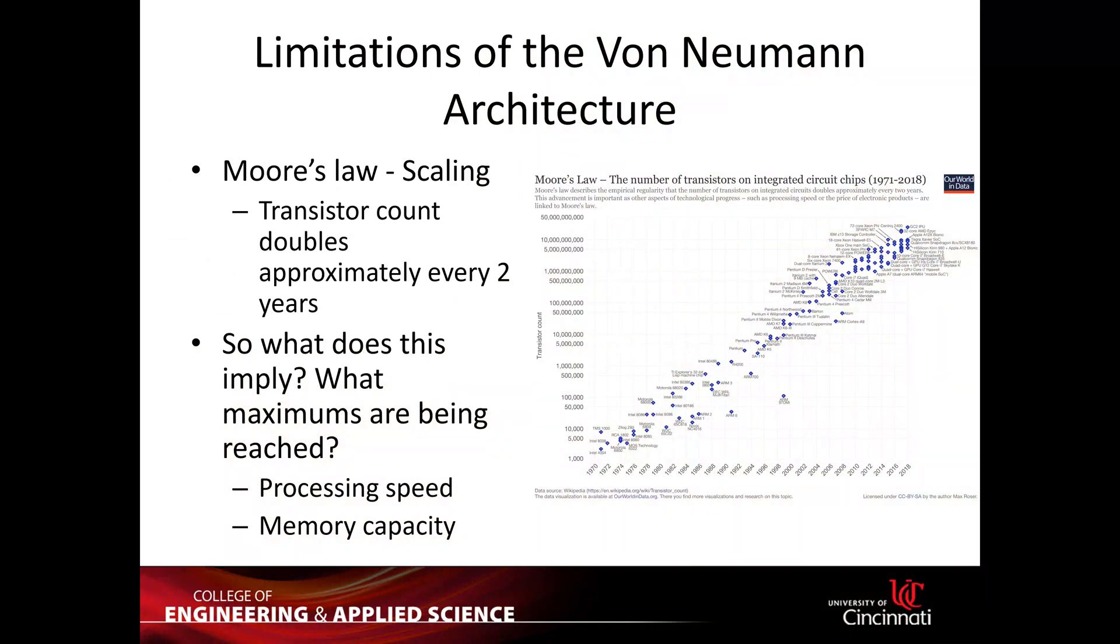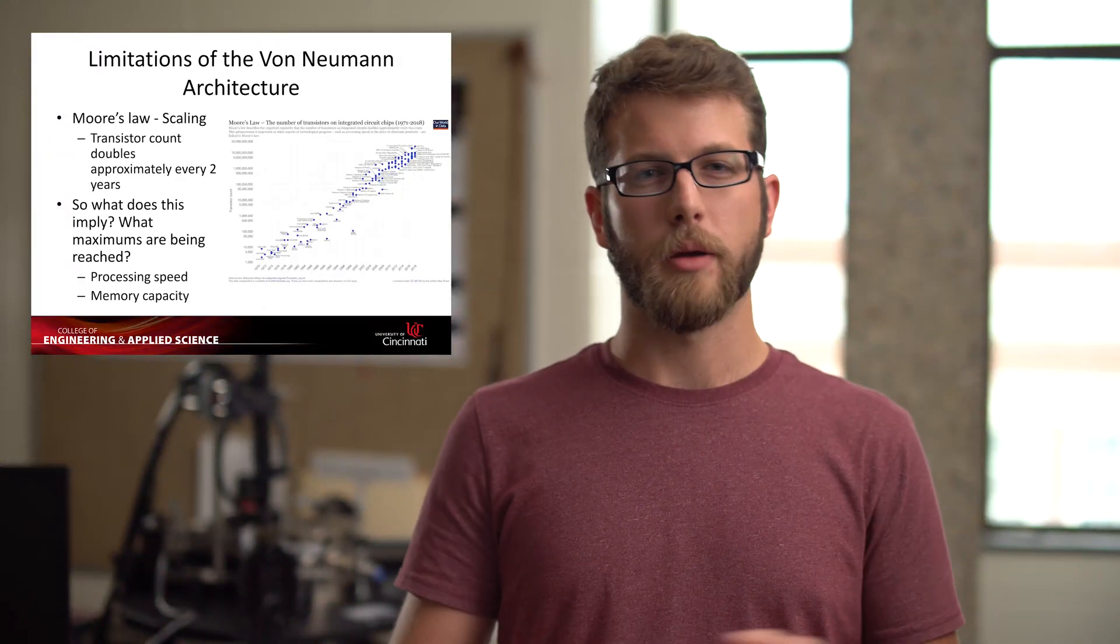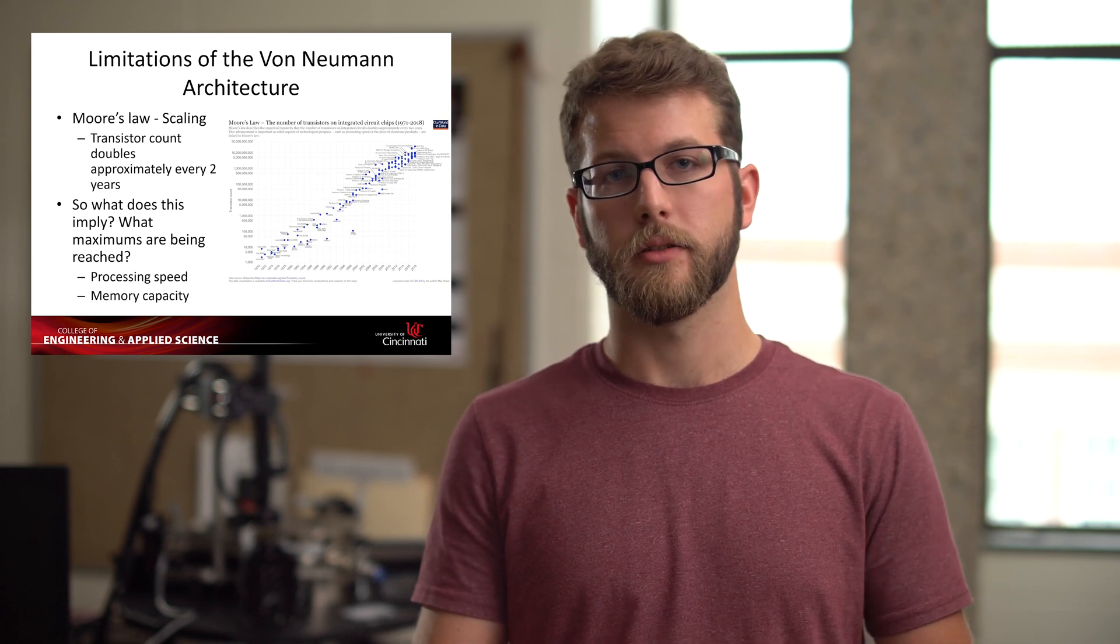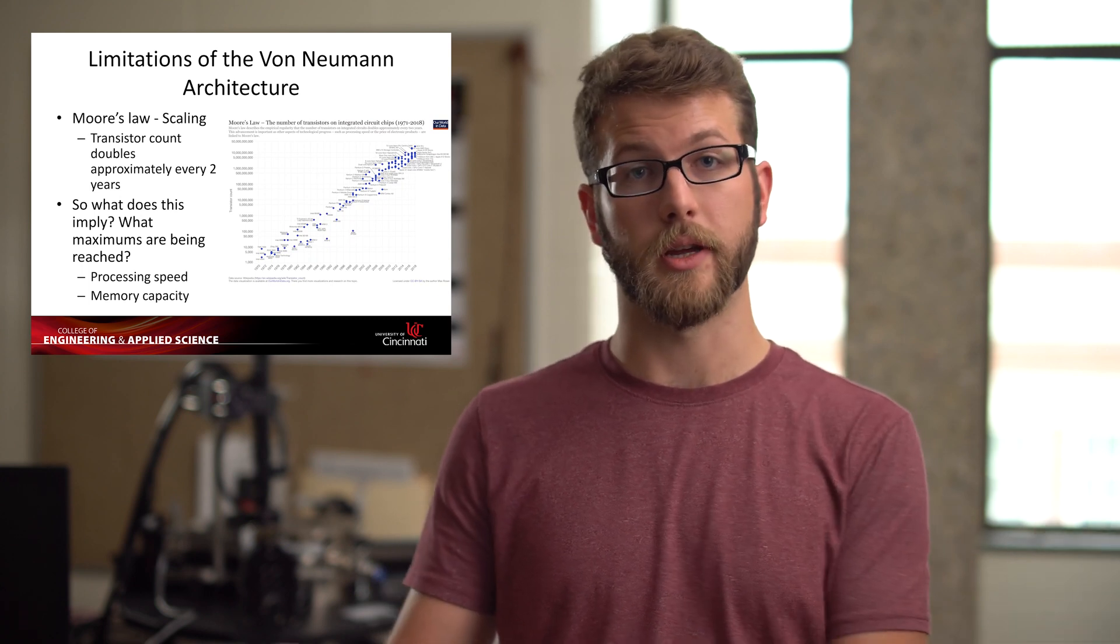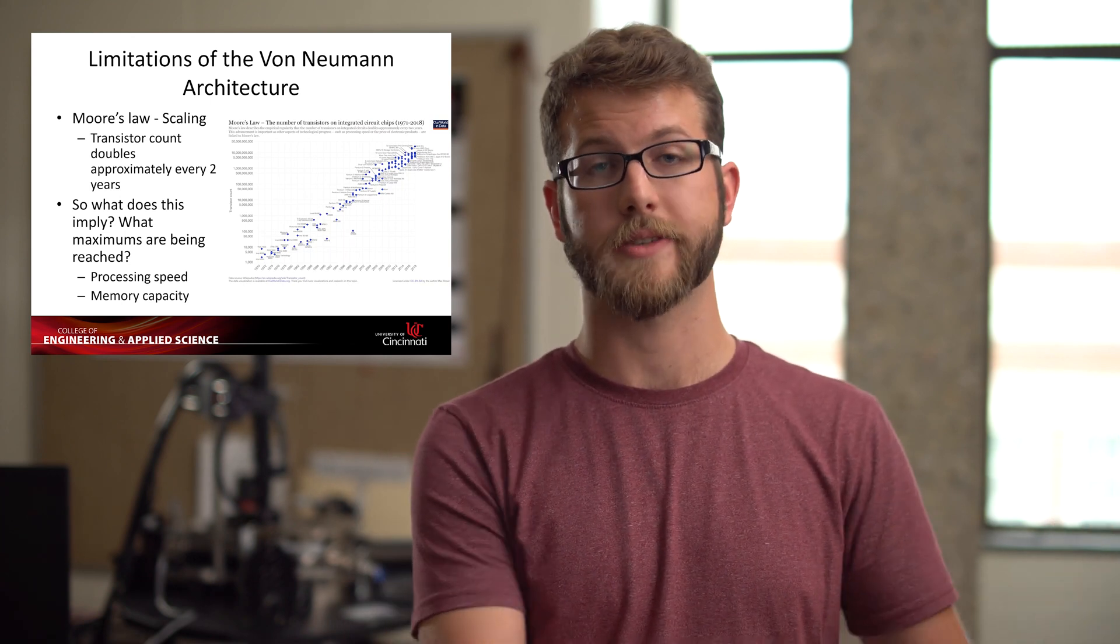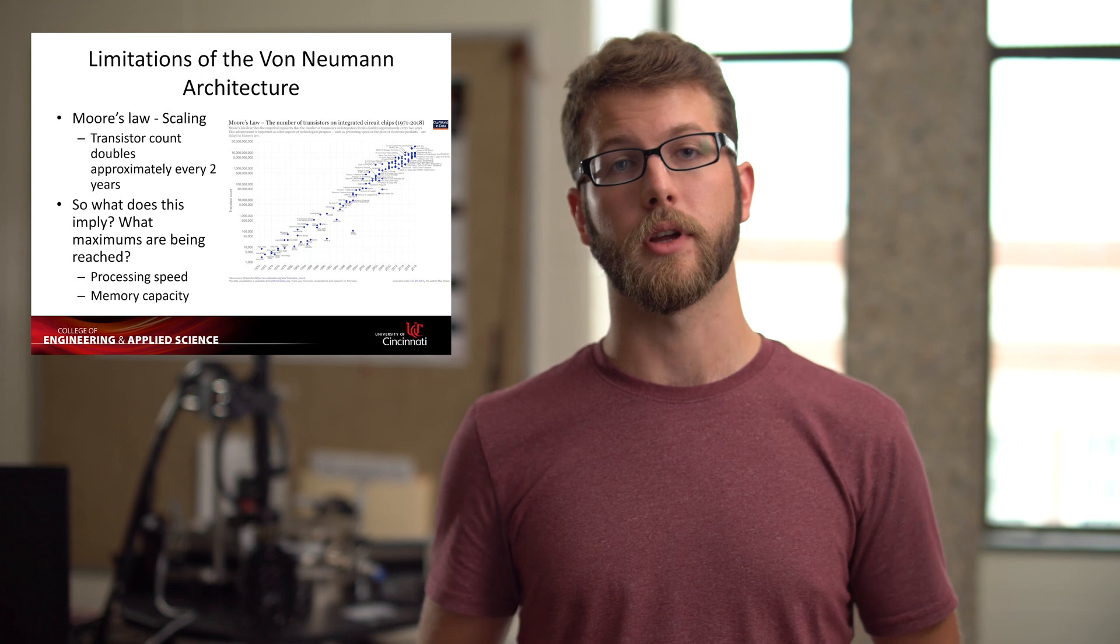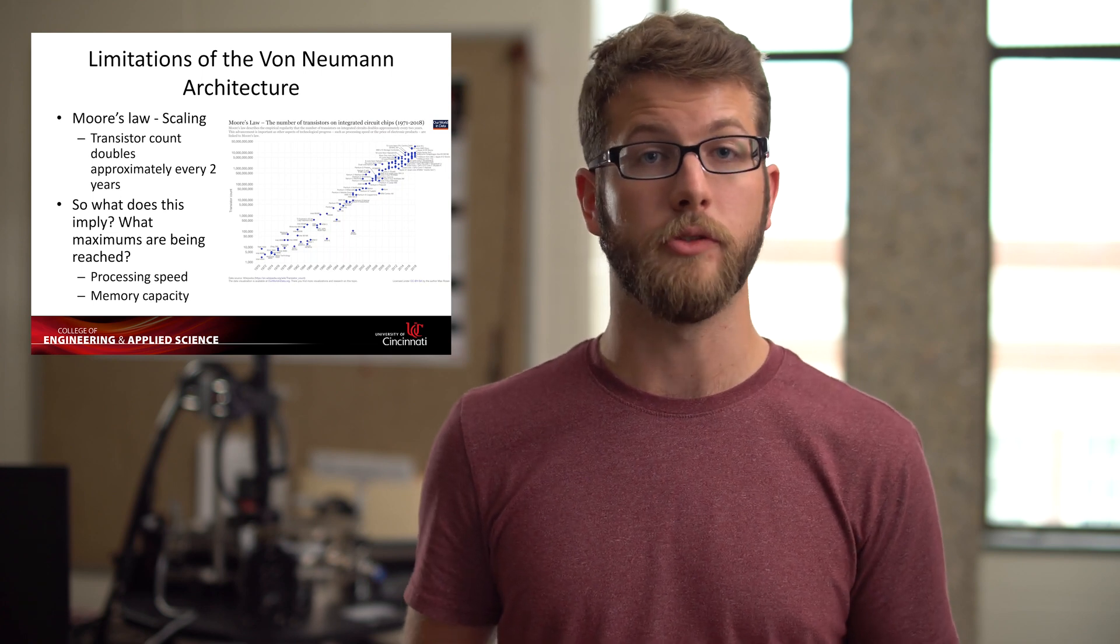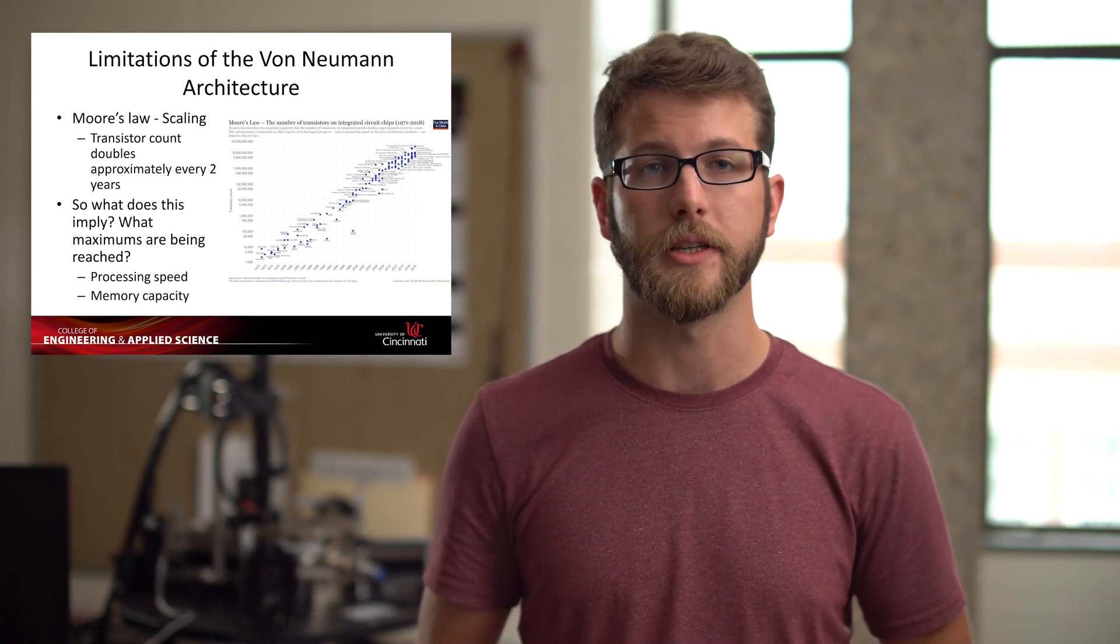So if we're going to be talking about this particular architecture, anytime you have memory separated from the main processor, so the external permanent memory and the internal processing unit, that's called a von Neumann architecture. It's named after a computer scientist by the name of John von Neumann, who died sometime in the 1950s.